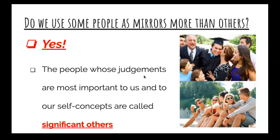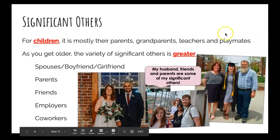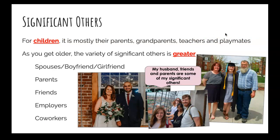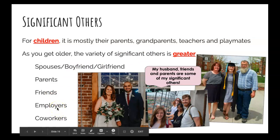We do not use this process with every single person we come into contact with. Sociologists say there are people in our lives called significant others whose judgments are most important to us. When you go to the grocery store, you may not be using the looking glass self process with strangers — you're probably not thinking about that lady in the milk aisle. But you do use this process with your significant others. For children, this is most likely family members like parents and grandparents. As they enter school age, it could be teachers and classmates.